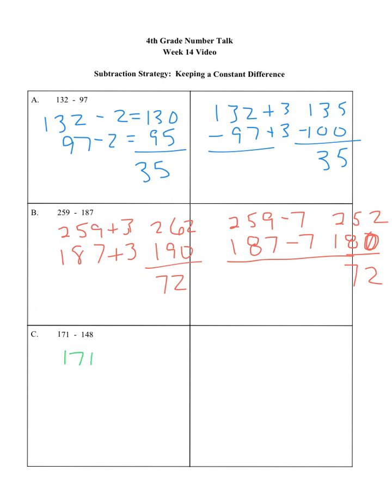We also can look at 171 minus 148. I'm going to focus on the subtrahend again. So I'm going to add 2. So that's 150. Add 2 to the minuend. That's 173. When I subtract 2, we find a difference of 23.